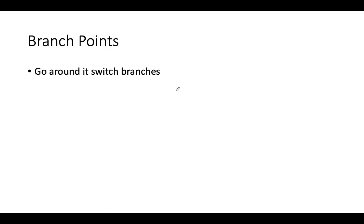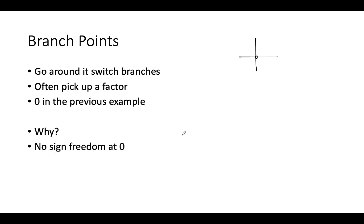Why is that? It's because we have branch points. A branch point is a point you go around to switch branches of the function. You often pick up a factor, like minus 1. In the previous example, 0 was a branch point of the square root function because there's no sign freedom, it's 0.